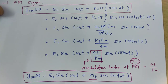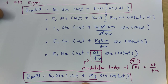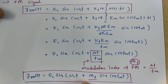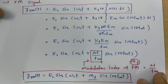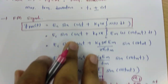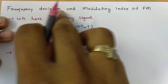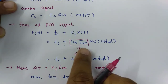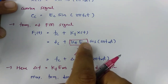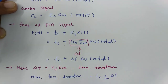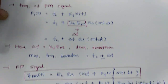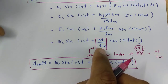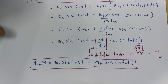These two basic equations represent the frequency modulated signal, where Mf is the modulation index equal to delta f divided by fm. To summarize: frequency deviation is frequency sensitivity Kf into Em, and modulation index is delta f divided by fm, where delta f is the frequency deviation.